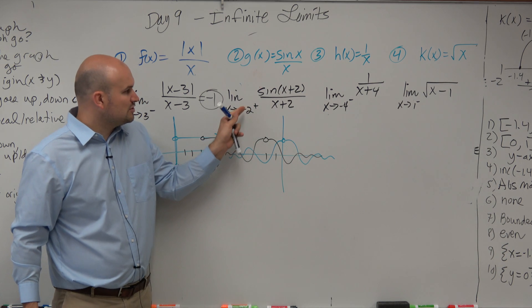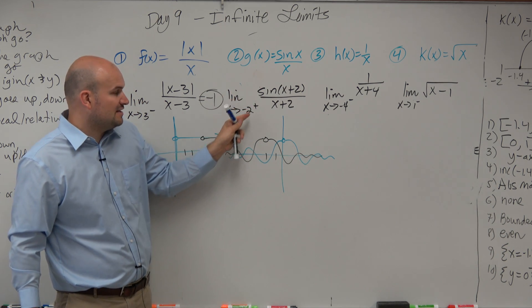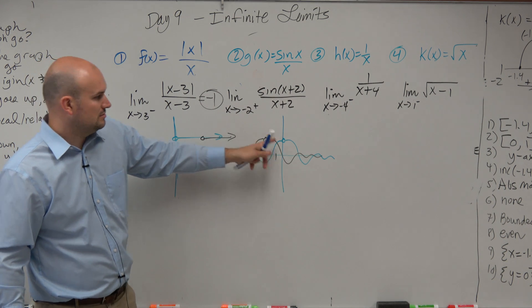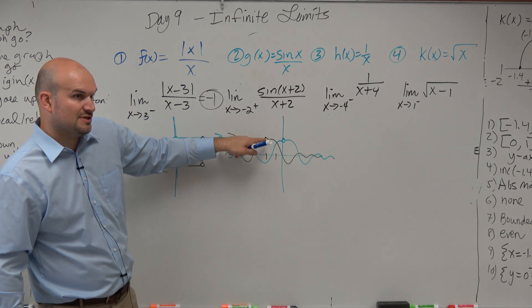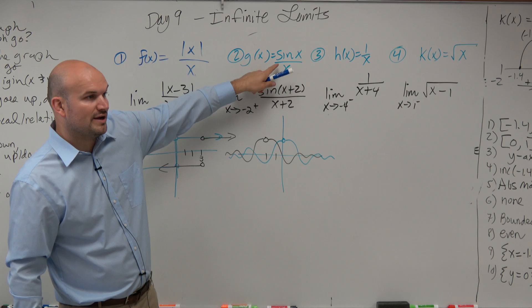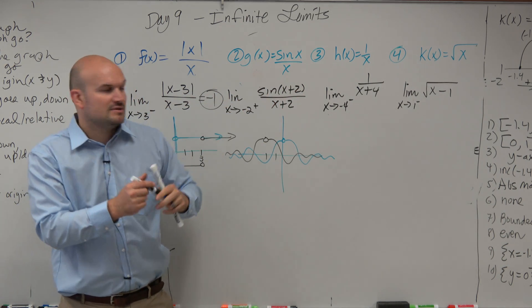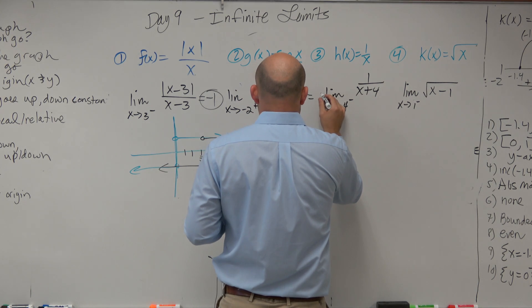So now, as I'm approaching negative 2, the limit at negative 2 from the right is still going to equal, what value is it getting really close to? 1. Remember, there's a hole there. So this plus 2, all it's doing is shifting the graph. So that's going to be at 1.